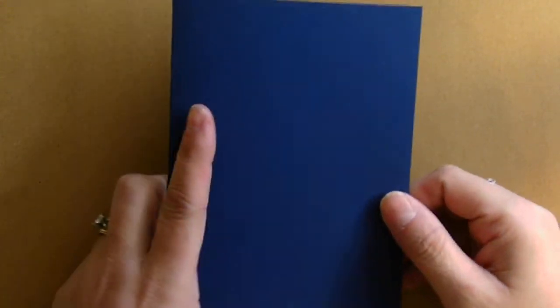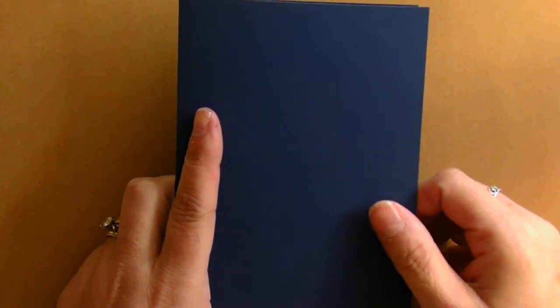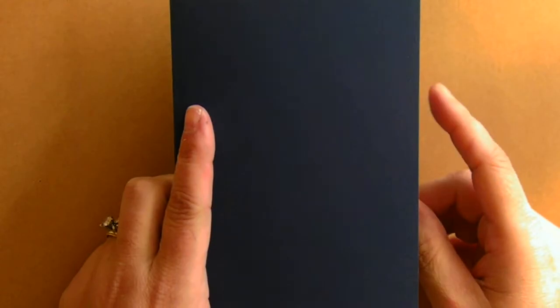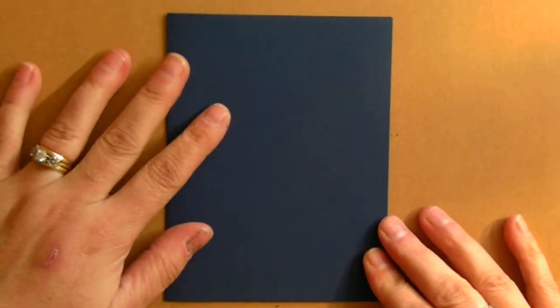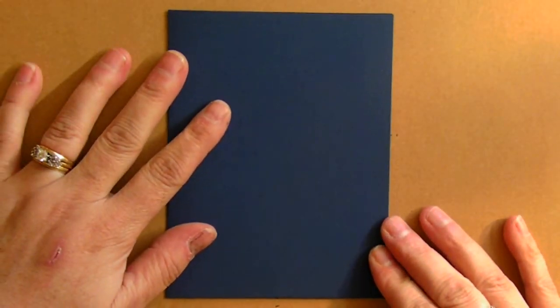So I started out with some dark blue cardstock. I think it is called Midnight Blue. It's a recollections brand and I started out with an 8.5 by 11. I cut it at 5.5 inches, folded it in half, used my bone folder for a crisp fold and it is a standard A2 size card.